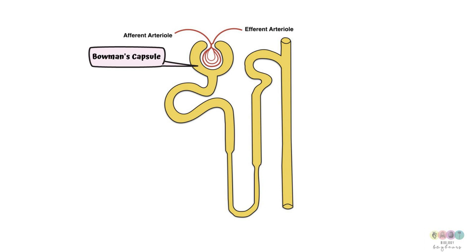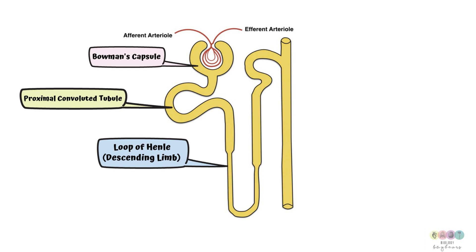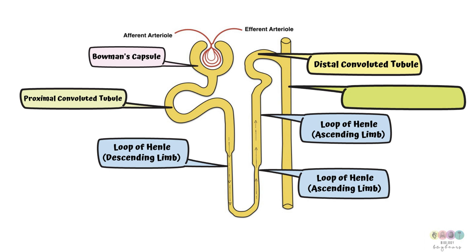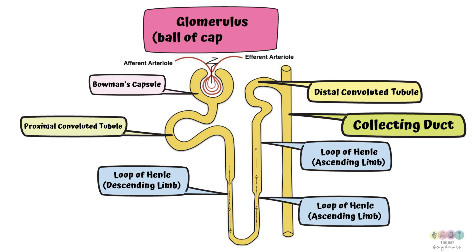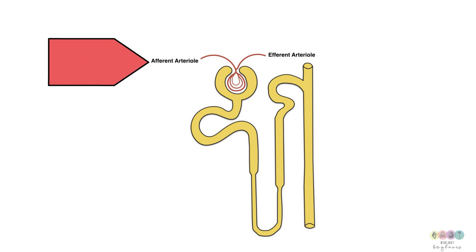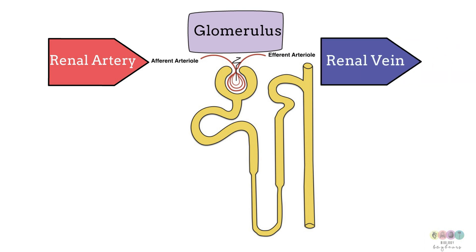Be able to draw and label a nephron. Start with Bowman's capsule, then the proximal convoluted tubule, which leads into the loop of Henle — which has a descending limb going down and an ascending limb going upwards. From the loop of Henle comes the distal convoluted tubule, which leads into the collecting duct. Positioned within Bowman's capsule is the glomerulus, a ball of capillaries. Blood flows into the glomerulus from the afferent arteriole and out through the narrower efferent arteriole, which eventually leads to the renal vein.